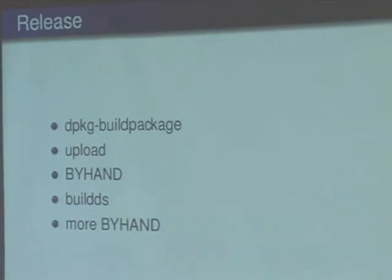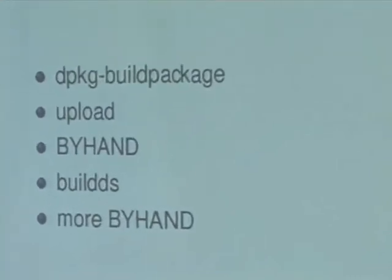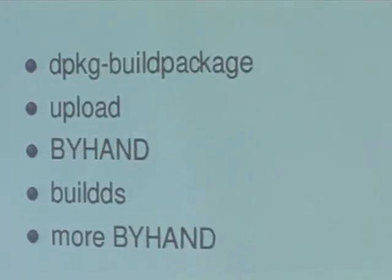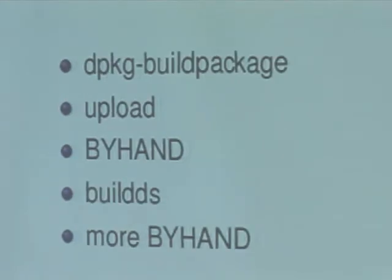What's involved in doing a release for Debian installer? Basically you start doing dpkg-buildpackage after checking your changelog. You do the upload, and then you have to wait for a long time, because the FTP masters have to do by-hand processing of the upload, because there's a tarball that needs to be extracted to a certain location on the mirror, and some symlinks have to be set there to make the installation images available for download. The irritating part is that the builds for the other architectures will only kick in after the by-hand processing has happened.